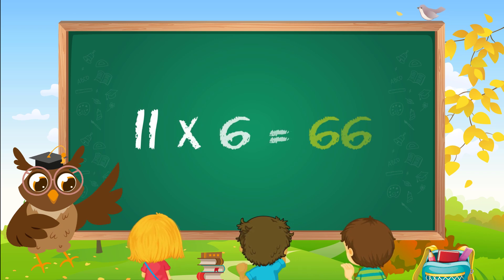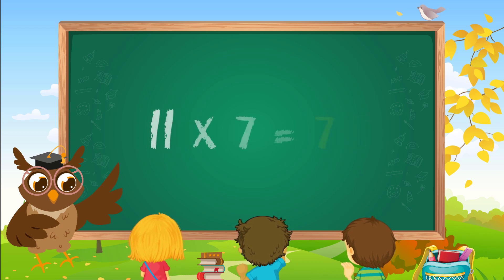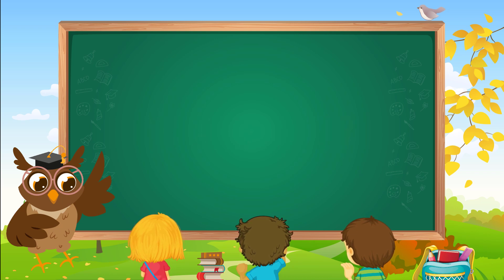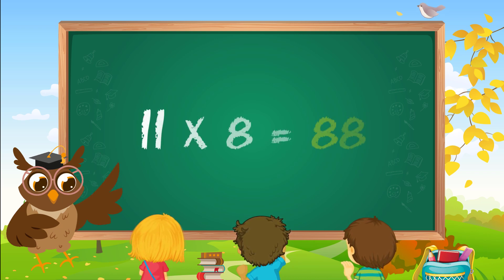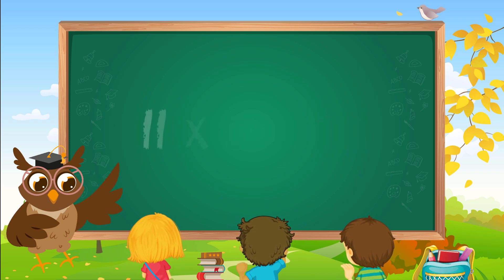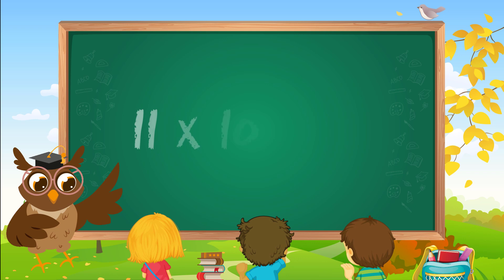11 sixes are 66. 11 sevens are 77. 11 eights are 88. 11 nines are 99. 11 tens are 110.